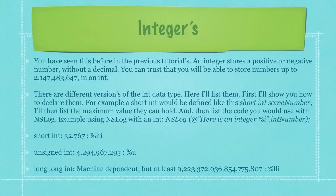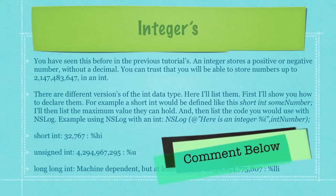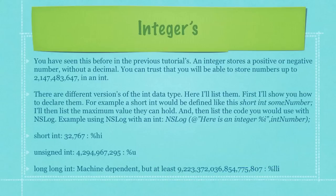You've seen the following in previous tutorials, but basically an integer stores a positive or negative number without a decimal. You can trust that you will be able to store numbers up to this gigundo number right here that I'm not going to read off. There are different versions of the int data type. Here below I'm going to list how to define those data types, the maximum number they can hold, and then show you what code you would use inside of the NSLog function if you wanted to print those integers out to the screen. If you define a long long int, the maximum number you can hold is completely machine dependent, but you can trust that you can, at the very least, be able to put a number of the length that you can see here in the fifth bulleted item.